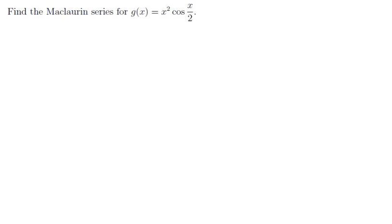Find the Maclaurin series for g of x equals x squared times cosine of x over 2. Notice that this is a complicated function — it has a product and a composition, so taking repeated derivatives would be rather difficult.